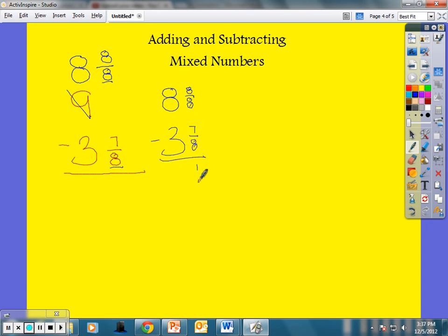So I'm going to rewrite this. I have 8 and 8/8 minus 3 and 7/8. I subtract. Eight minus seven is one. That's 1/8. Eight minus three is five. 5 and 1/8.